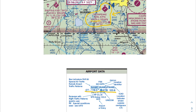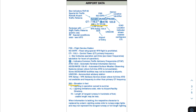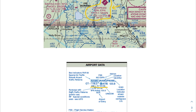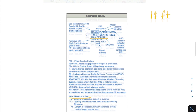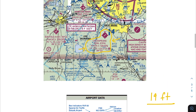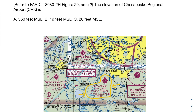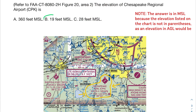Looking at the next line in our airport data, we see that 285 corresponds to an elevation in feet in the legend. Matching that pattern, the first number on that line for Chesapeake Regional is 19 — so the elevation is 19 feet. Unlike some other sectional chart problems, you don't need to add two zeros here; it's a bit inconsistent. The elevation of this airport is 19 feet. Checking our answers: 360 feet MSL — no. 19 feet MSL — yes. The correct answer is B.